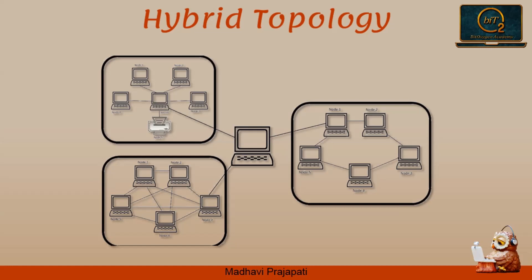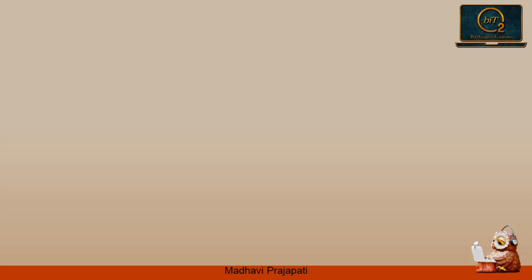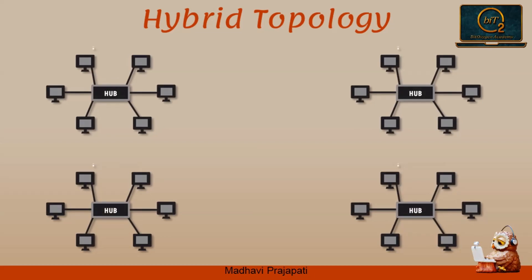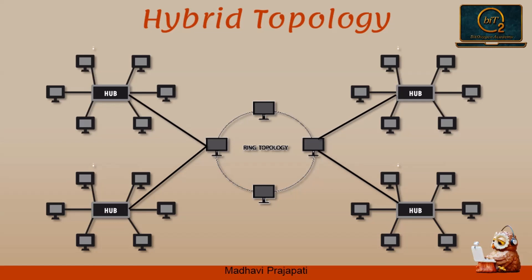As you see in the figure, for example, if in an office one department uses ring topology and another department uses star topology, connecting these topologies will result in a hybrid topology. If you want a hybrid topology with ring topology as a backbone and star topologies, you can connect all four star topologies with the ring topology, which will result in a hybrid topology.